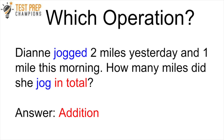The correct answer is addition. First, we look at the keyword 'in total,' which suggests either addition or multiplication. To decide which, we look at the labels — the label in a word problem tells us what the number refers to. Here the labels refer to the miles Diane jogged. The label 'jogged' matches the label of the keyword in the question, which tells us we're probably adding or subtracting. Combining that with 'in total' as a keyword for addition, we can conclude the answer is addition.